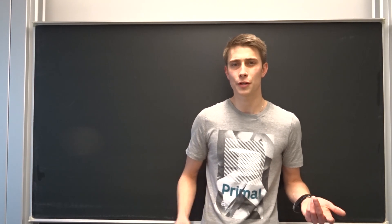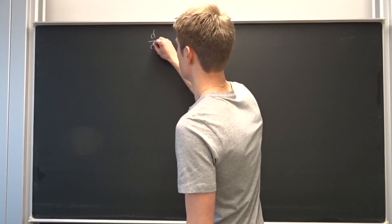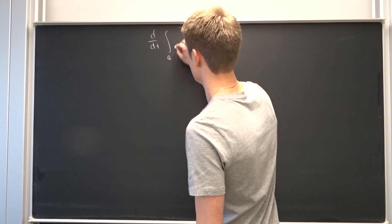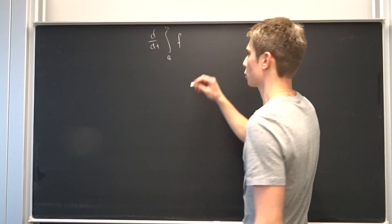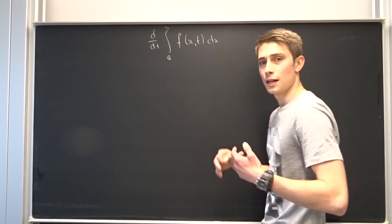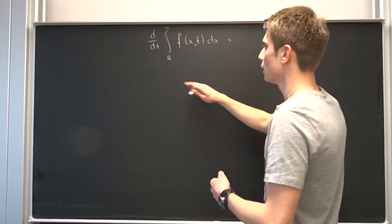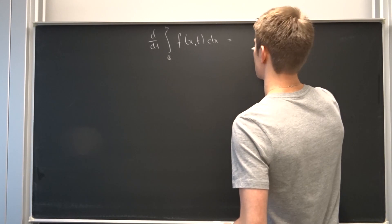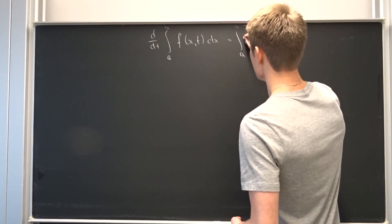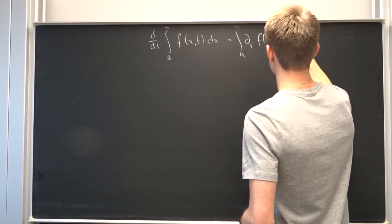So what is it about? We are going to talk about something like this. So imagine we have a derivative in terms of t of some integral from a to b of some arbitrary function f in terms of x and t, times dx. And we can use the Leibniz rule to interchange the integral sign and the differentiation. So that's the same as the integral from a to b of the partial derivative in terms of t of f in terms of x and t, times dx.